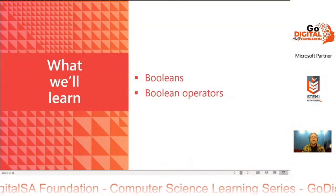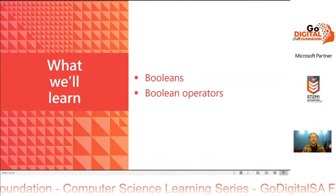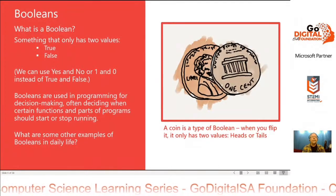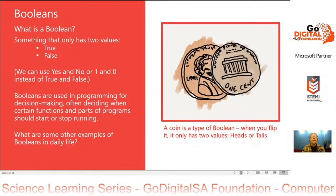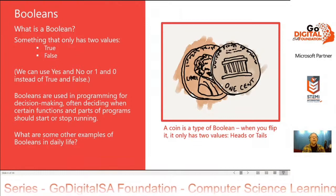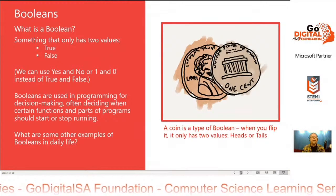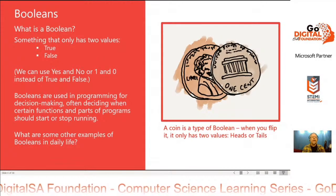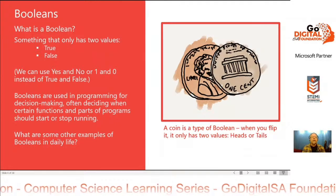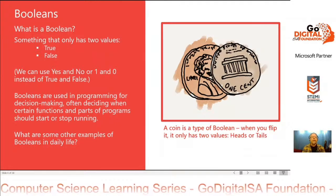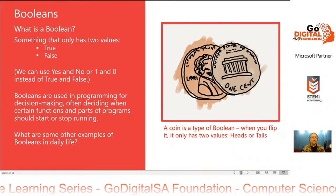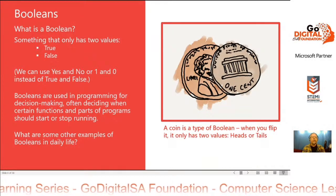We'll learn about Booleans and Boolean operators. So what is a Boolean? A Boolean is something that only has two values, either true or false. We can also use yes and no, or one and zero, instead of true and false. Booleans are used in programming for decision making, often deciding when certain functions and parts of programs should start or stop running.